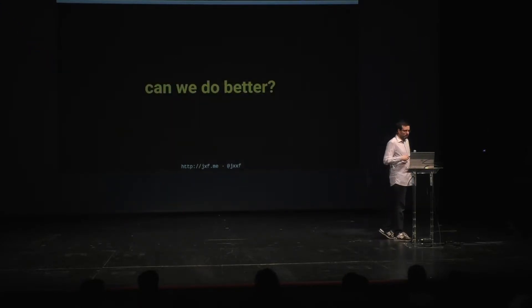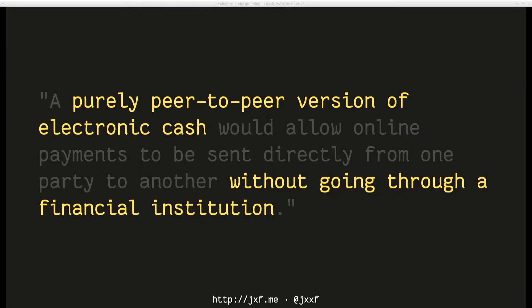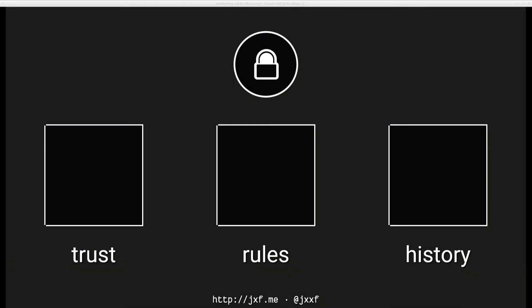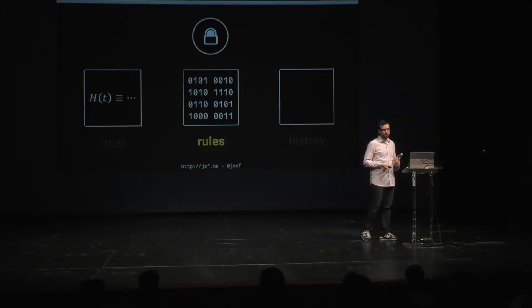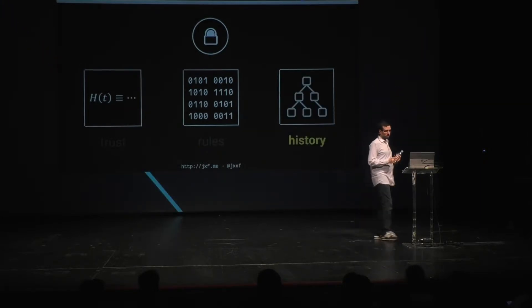Can we give people a better experience? Satoshi's idea was: if we had a purely peer-to-peer version of electronic cash, you wouldn't need to trust that institution. People who are advocates of cryptocurrency think there's a better way to fill out this recipe. The trust should come from math — from faith in digital signatures. The rules come from software describing the protocol of how you are and aren't allowed to use the cryptocurrency. And the history comes from something called the blockchain.